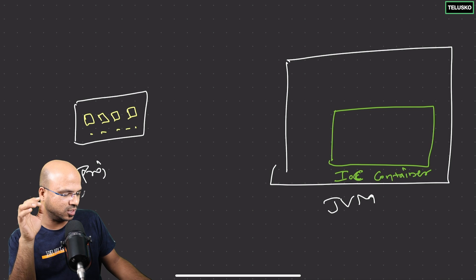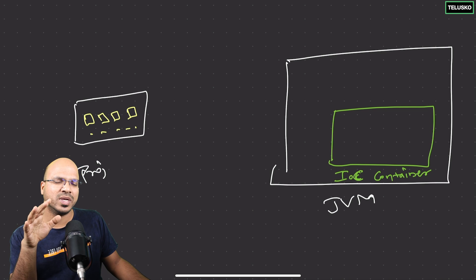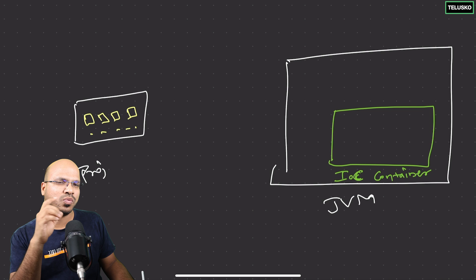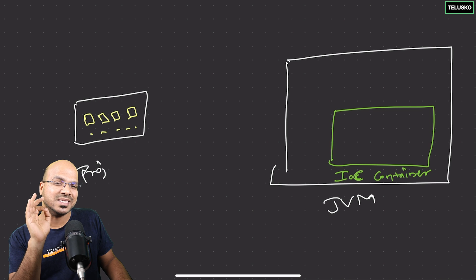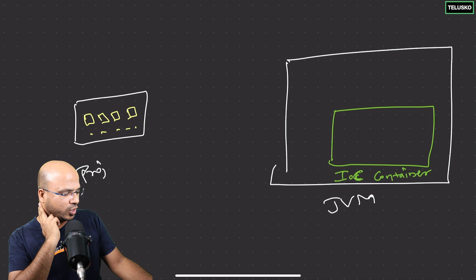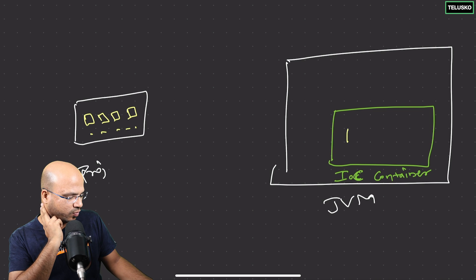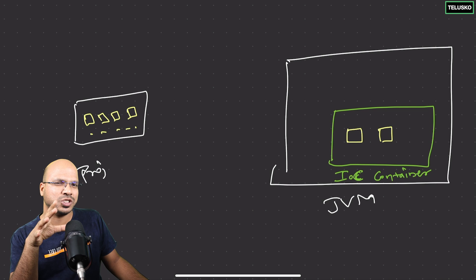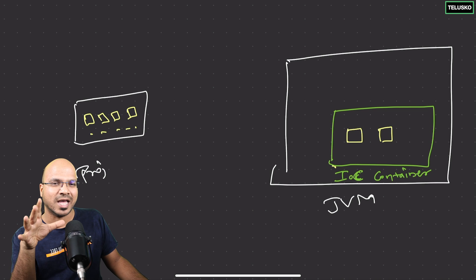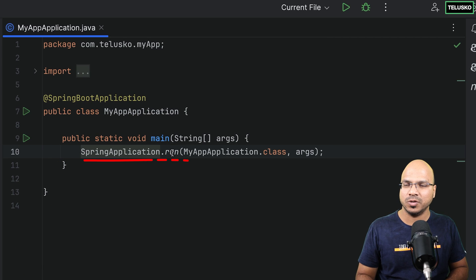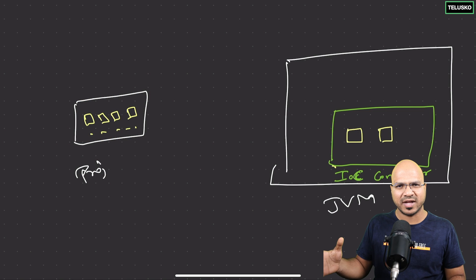This IOC container — the green box inside the JVM — is where Spring creates all the objects. You don't need the object of every class; Spring only creates objects for the ones you specify. The container itself is an object of type ApplicationContext inside the JVM. So when you want to run this application, the first thing you need is the container, and this SpringApplication.run line is responsible for creating that container.